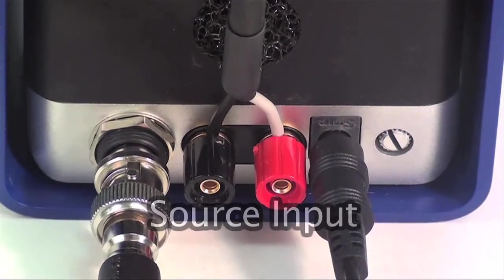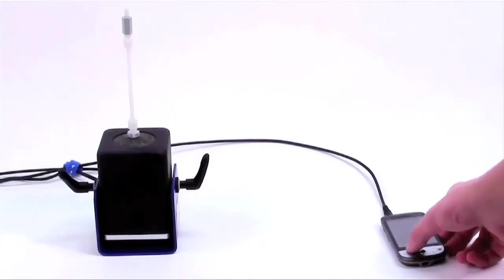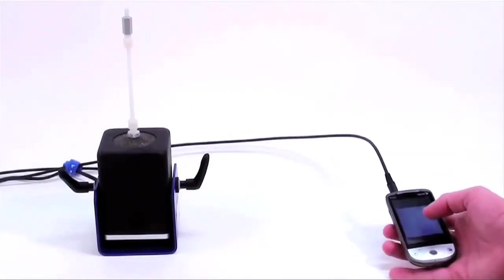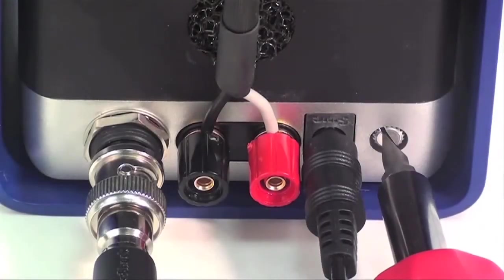Next, connect the signal source or function generator to the signal input BNC connector of the SmartShaker. In this demonstration, we are going to use a simple 1 kilohertz tone to verify the system is up and running.